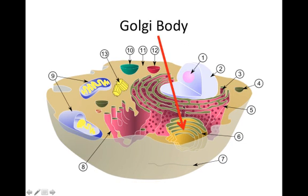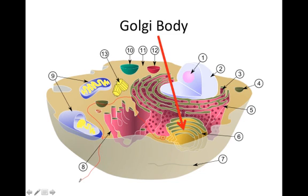Next we have the Golgi body, sometimes called the Golgi apparatus. The Golgi body is a structure floating in the cytoplasm that looks similar in shape to the smooth endoplasmic reticulum but is not surrounding the nucleus. What the Golgi body does is package big molecules, such as proteins, so they can be moved to other places in the cell. It might wrap a protein in a membrane so it can be shipped elsewhere in the cell, or move it to the cell membrane to be exported.